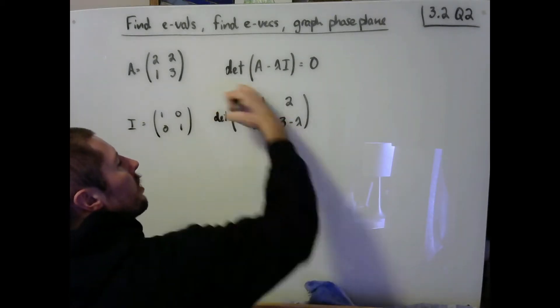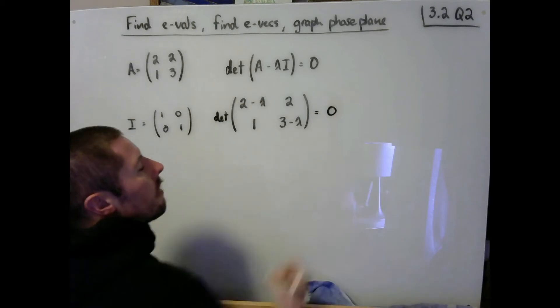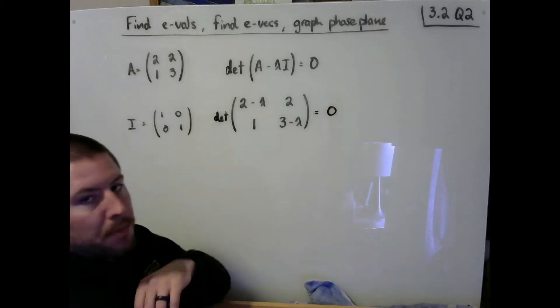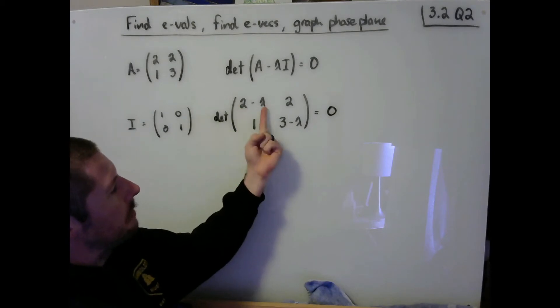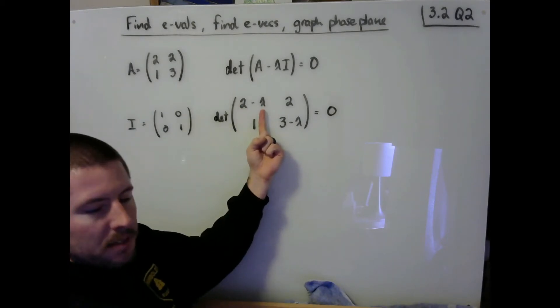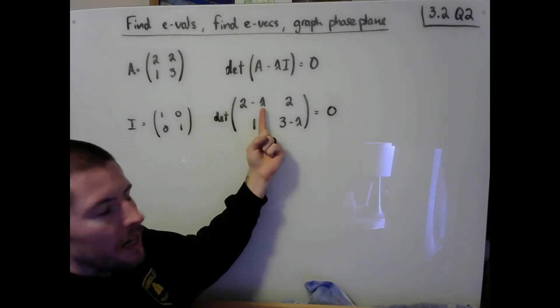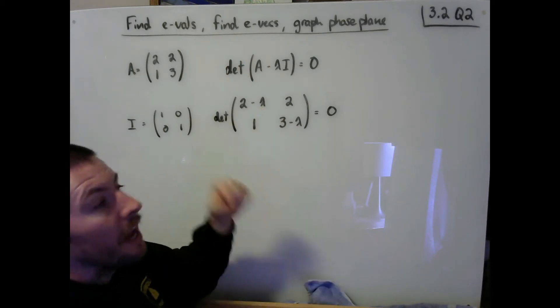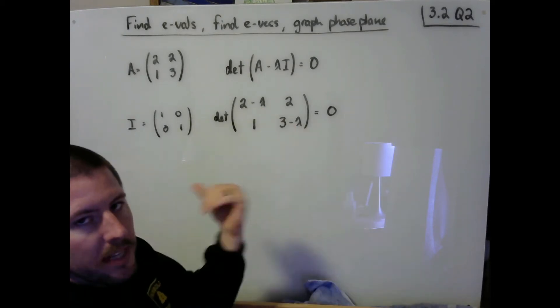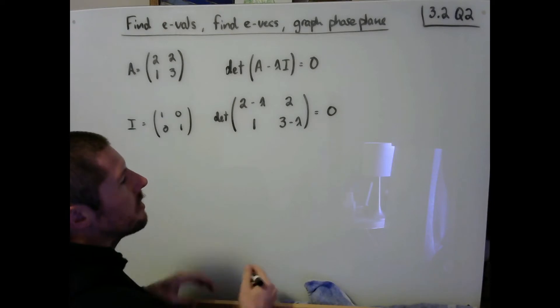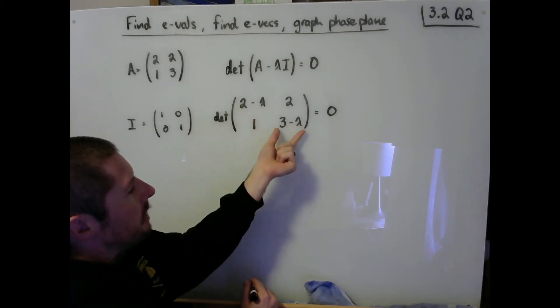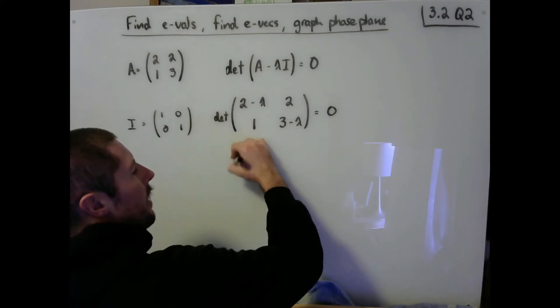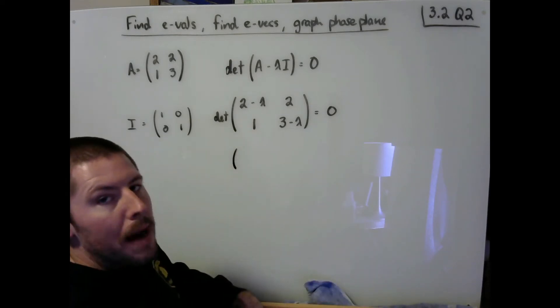We're interested in taking the determinant of this matrix and setting it equal to 0. One thing I want to point out that's going to happen pretty much every single time you do this is that you're always going to have your variable lambdas the second term. I always like to have things that look more like x plus 2 times x plus 3. So notice here that if I factor out a negative from the first term and factor out a negative from the second term,